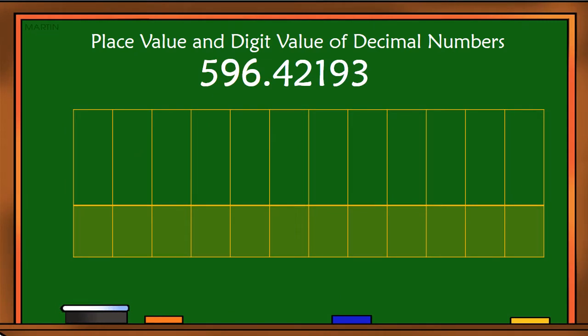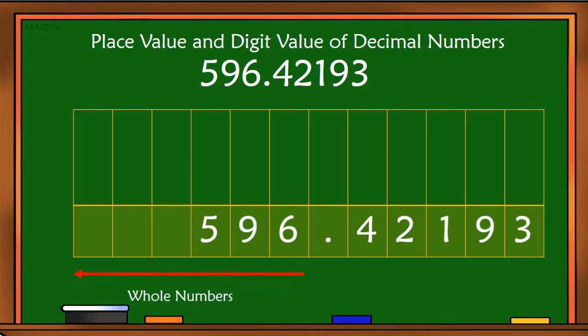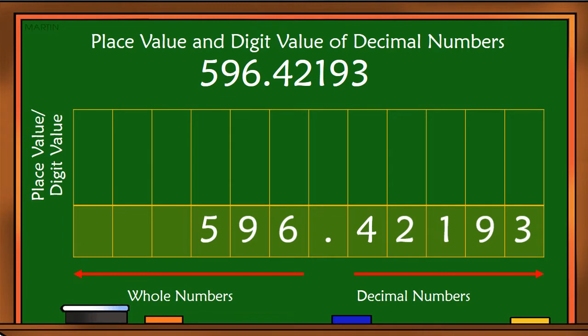Now let's look at the place value and digit value of decimal numbers. The numbers on the left side of the point are called the whole numbers, and the numbers on the right side of the point are the decimal numbers.